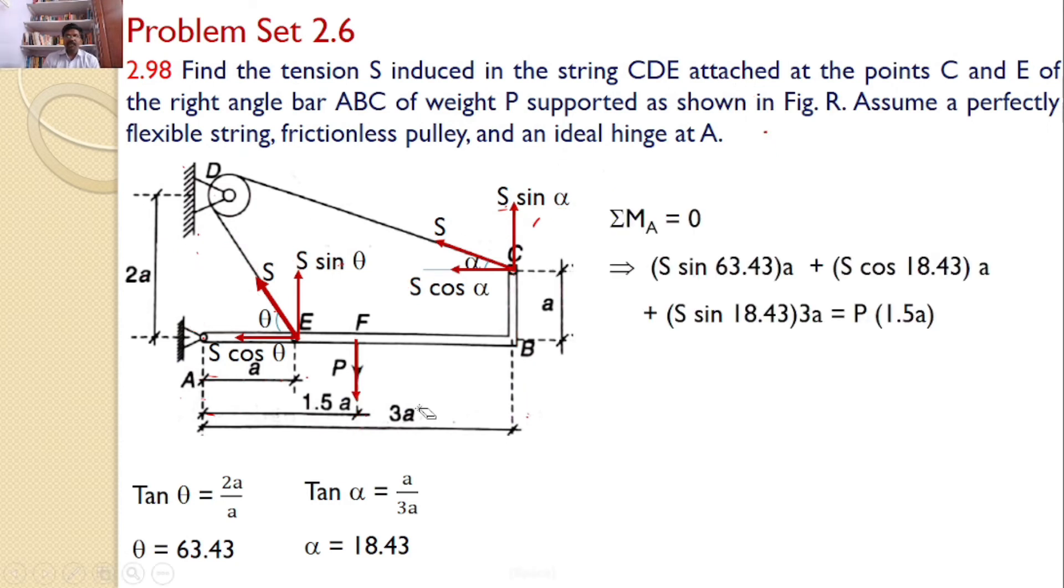So by taking the moments, you can see S sin 63.43, because theta value is 63.43. Sin 63.43 will introduce a moment in the counterclockwise direction and the distance is a. So S sin 63.43 into a. And then S cos alpha, this also introduces a moment in the counterclockwise direction. And the line of action of S cos alpha is at a distance of a. Hence I can say S into cos alpha value is 18.43. S cos 18.43 into the distance a.